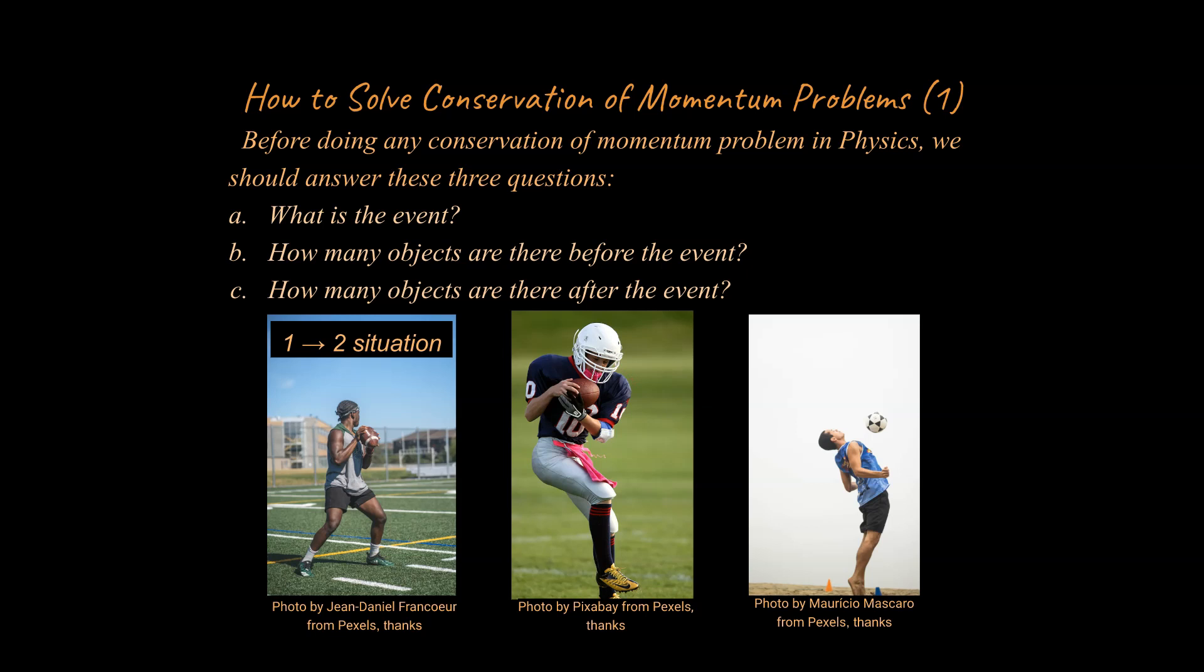How many objects are there before the event? Before the catching of the football, there were two: the ball and the football player. We treat those as two separate objects because before they collide, before the ball is caught, they are moving independently of each other.